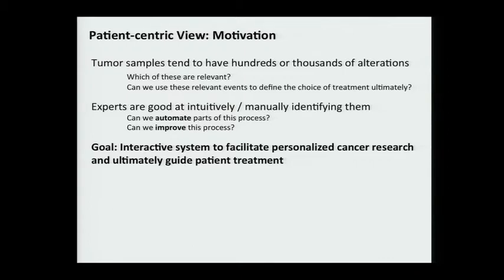We just released this patient view. We aggregate, integrate, and filter diverse data sets and present them to the user. We want to do something more intelligent because tumor samples oftentimes have hundreds or even thousands of alterations. Which of them are relevant to the disease, and can we use these relevant events to define the choice of treatment? Experts are pretty good at intuitively identifying them. Can we automate part of this process, and can we even improve it? Our goal is to develop an interactive system to facilitate personalized medicine research for cancer and ultimately guide patient treatment.